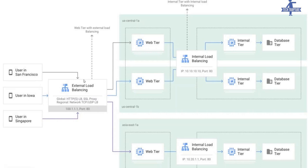This is the external load balancer or HTTPS load balancer. Similarly, the same happens for your database with an internal load balancer. The load balancer will serve traffic from the healthy or nearest database for better performance and minimal latency. If traffic is coming from the web tier in US Central 1B, it will serve the request from the database in US Central 1B, and similarly for US Central 1A.